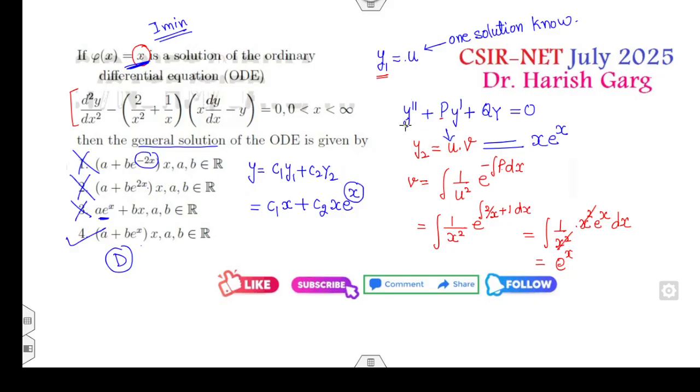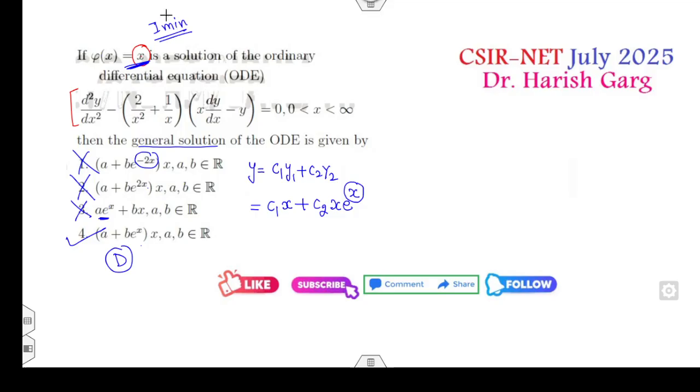There is one more way, another shortcut trick. You can write the differential equation here: 2/x² + 1/x times x·Y' - Y. Let's start with the third option. Third option says Ax + Bx. What is the meaning of e^x? That means M is my 1 corresponding to the auxiliary equation. So I can say Y = e^x is a solution.